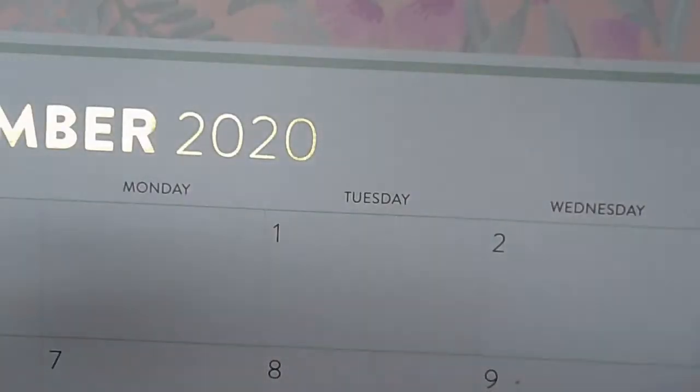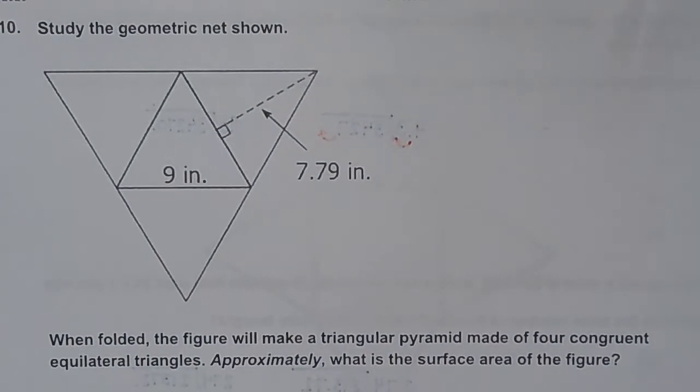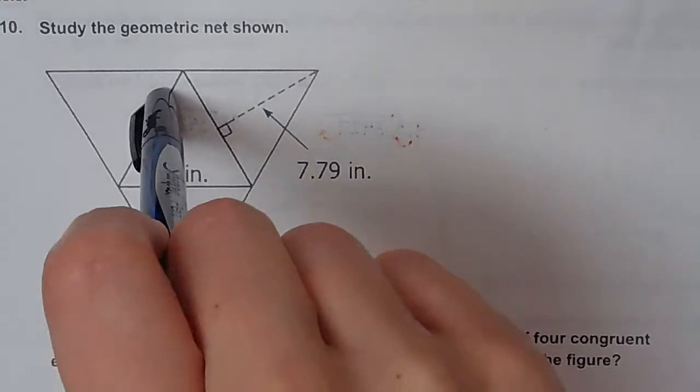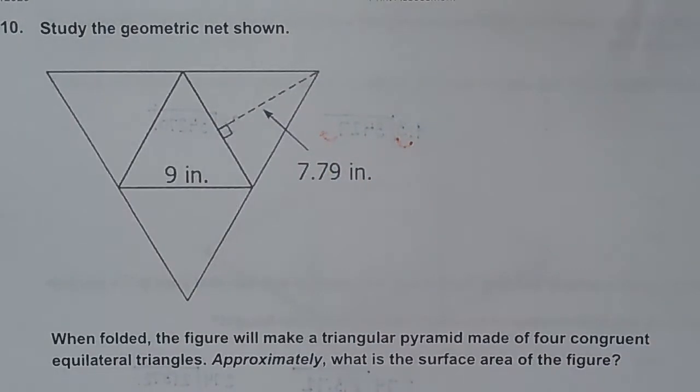Alright, surface area. This is going to keep coming up because it's not going away. It is something that's going to be on your EOG, and since we did it at the beginning of the school year, I want to keep reminding you how to do it. Remember, surface area is when you find the area of every single side and then you add them up. So for this shape, this is a triangular pyramid. I want to find the area of all four sides and then I'm going to add them together. The key is that you have to remember your formulas for these shapes. All of these shapes are triangles, so that makes it a little bit easier as long as you remember the formula.